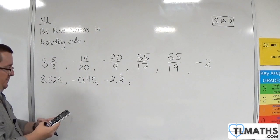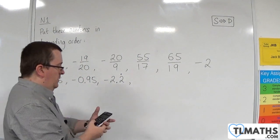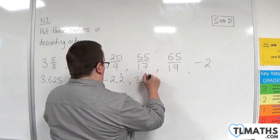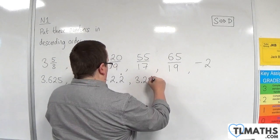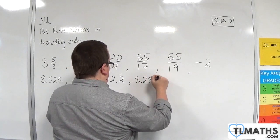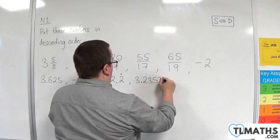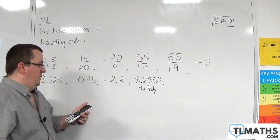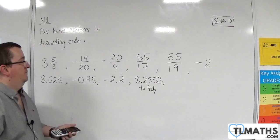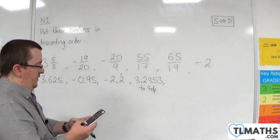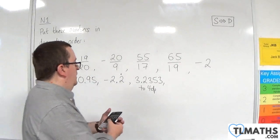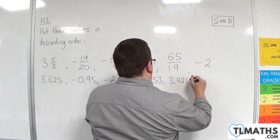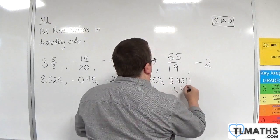55 divided by 17, now I'm going to write this to 4 decimal places, so 3.2353. Then 65 divided by 19 is 3.4211 to 4 decimal places.